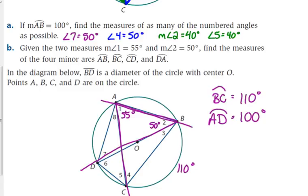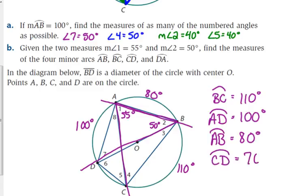I'll put these on the circle to help us out, because you're probably thinking: how do we figure out AB and CD? We don't have their inscribed angles. But we still have our knowledge about these arcs. BD is a diameter, so each half of the circle is 180. If arc AD is 100, then arc AB is 80. If arc BC is 110, then arc CD is 70 degrees. All this works in conjunction with each other.